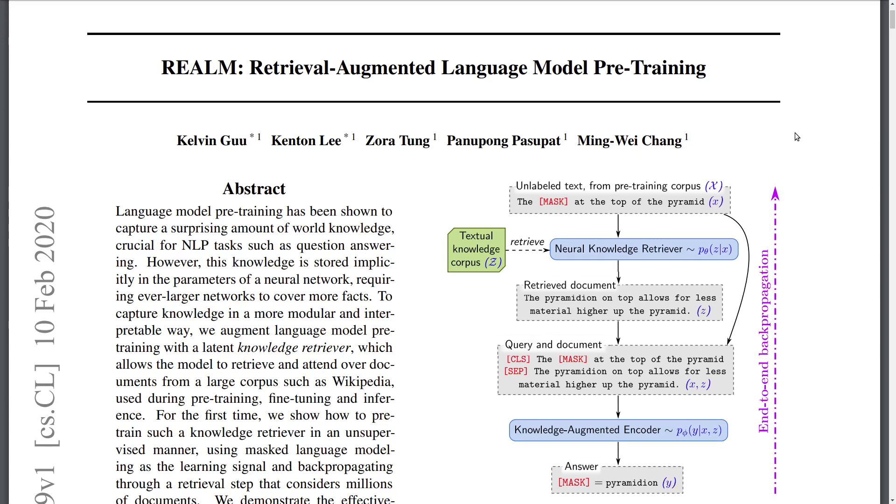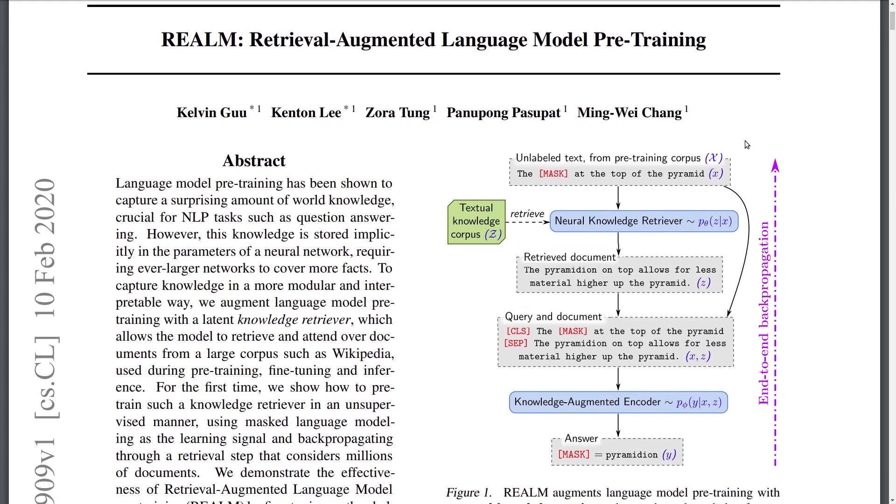Hi everyone, welcome to another NLP Journal Club video. Today we're looking at a paper called REALM: Retrieval Augmented Language Model Pre-Training by a bunch of authors from Google Research.